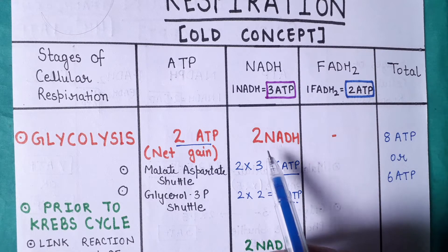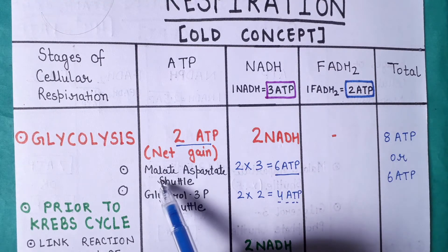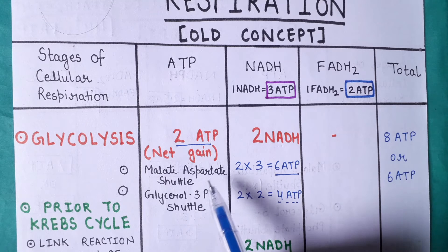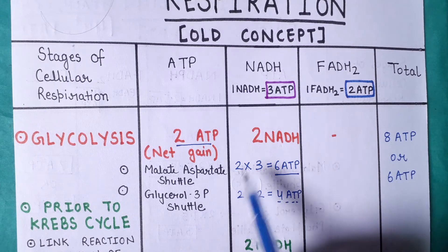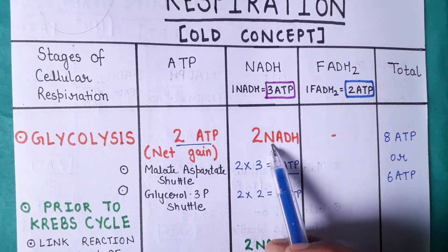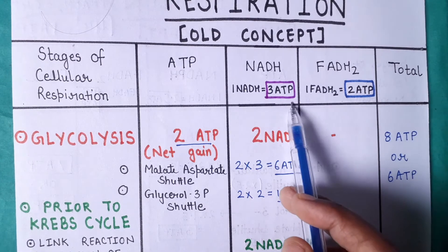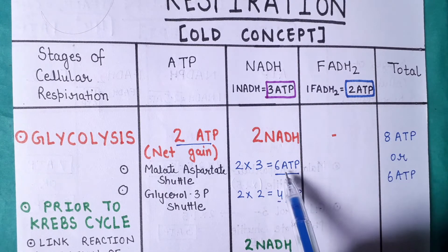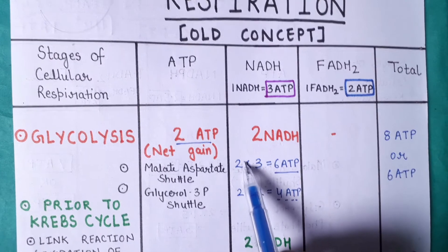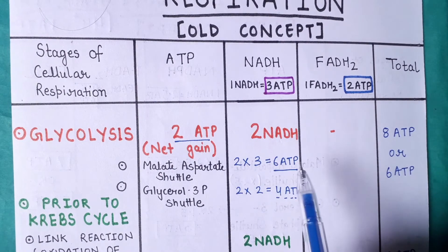When NADH is transported using the malate-aspartate shuttle, one molecule of NADH gives you 3 ATP. So two molecules of NADH multiplied by 3 gives you 6 ATP.